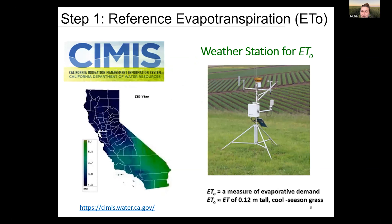Reference evapotranspiration is easy to obtain because it's provided by public services. In California, that's the CIMIS network. You just go online, sign into CIMIS, and find the meteorological station closest to your orchard. These stations are placed throughout California and measure how much water is evapotranspired by a grass surface. This data is easily available online — monthly or weekly, depending on your irrigation scheduling.